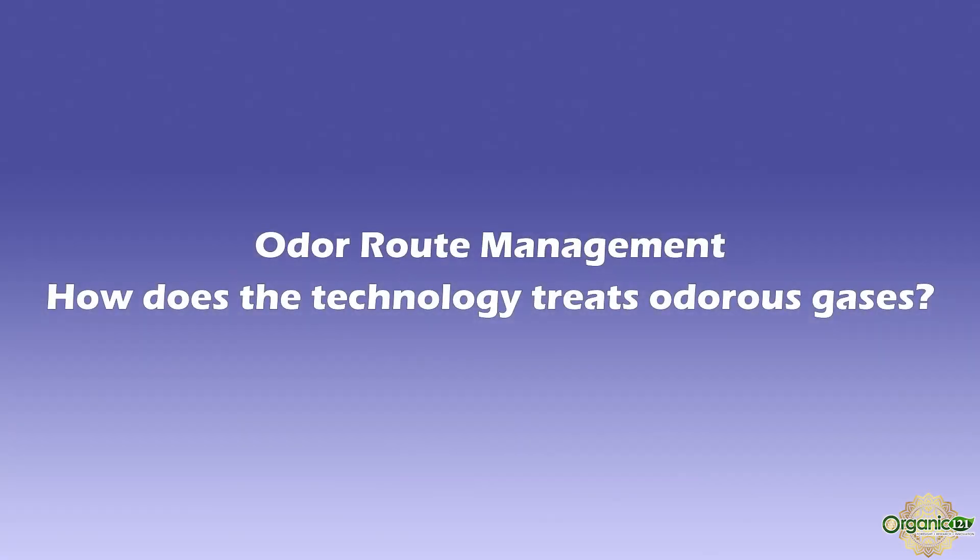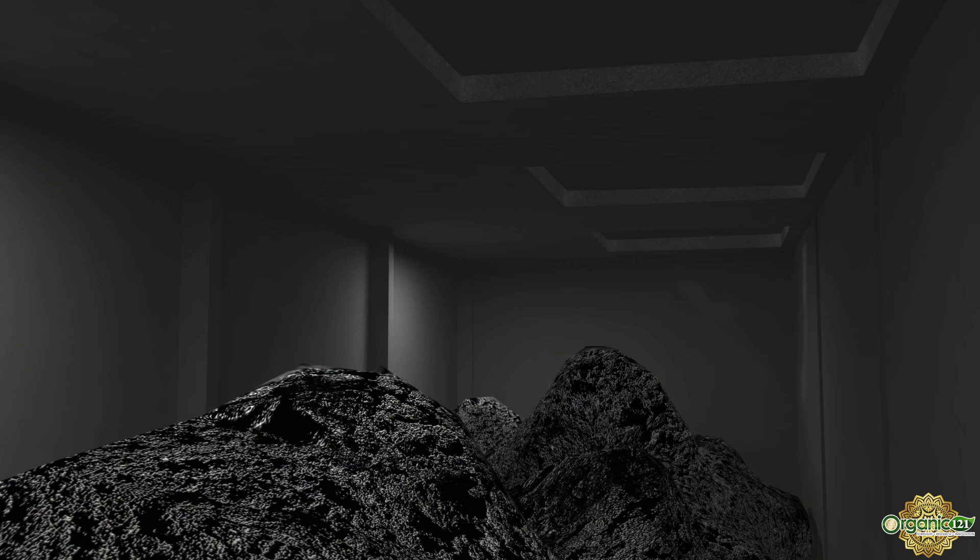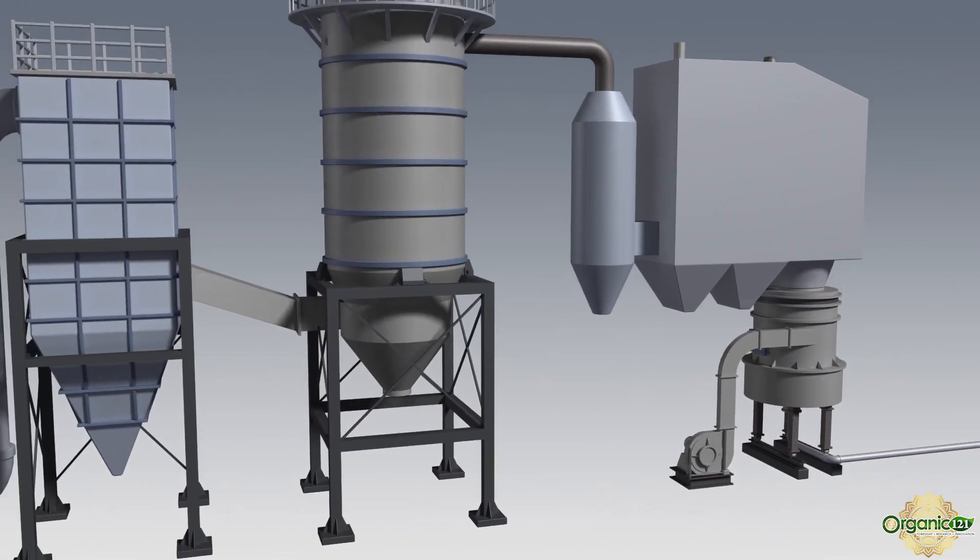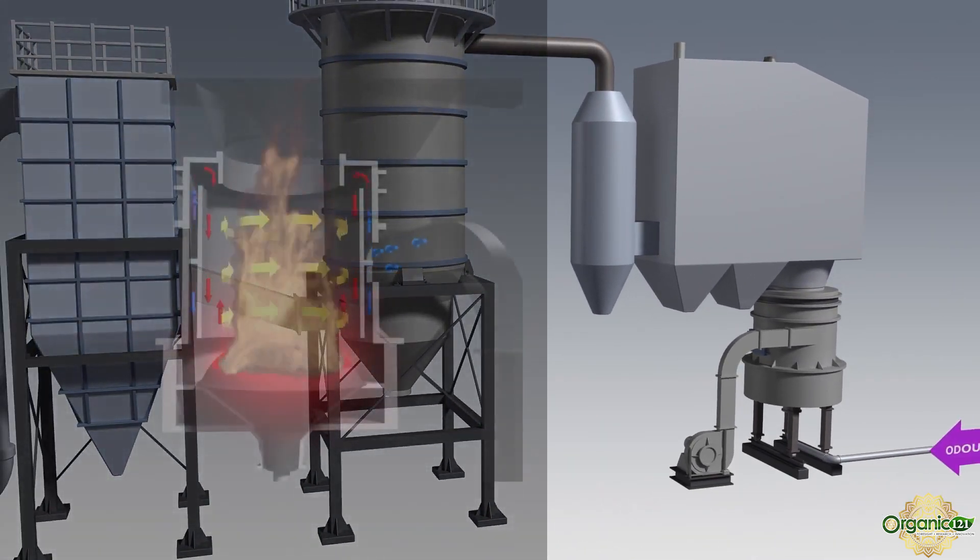Now, how does the technology treat odorous gases? Odorous gases extracted from various processes are channeled to the incinerator. Recall that the center of combustion chamber is an ultra high temperature of 2000 degrees Celsius. It can completely destroy all odorous gases.